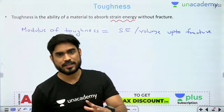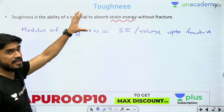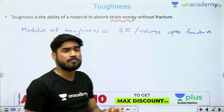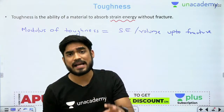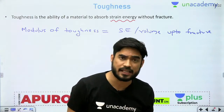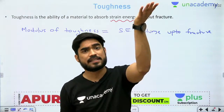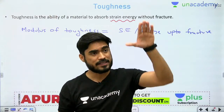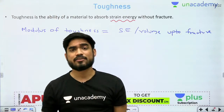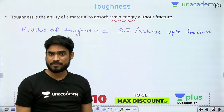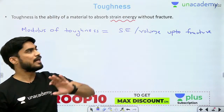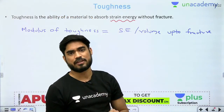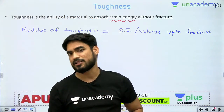So toughness is the measure of how much impact load you can apply on a material. If toughness is more, you can apply more impact load; if toughness is less, you can apply less impact load. I hope the definition and significance of toughness is now understood.